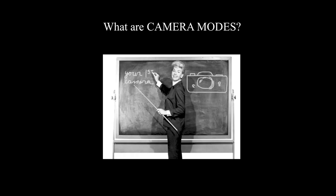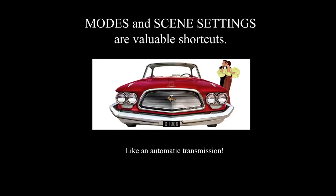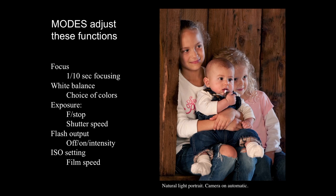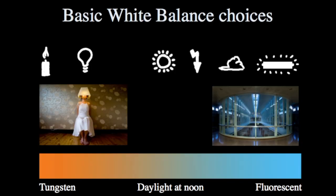What are camera modes? Modes and scene settings are valuable shortcuts, and they are somewhat like an automatic transmission in a car. You do the driving once the gear selector is in D, and that's a lot of what we do with these new automatic digital cameras. The modes change how the cameras react to the various light scenes that we're presented with, but mainly these automatic functions in the modes are helping us to focus. They're doing automatic focus, so you just press down on the shutter and the camera focuses for you in about a tenth of a second, which is very fast. The camera in these various modes also chooses the white balance.